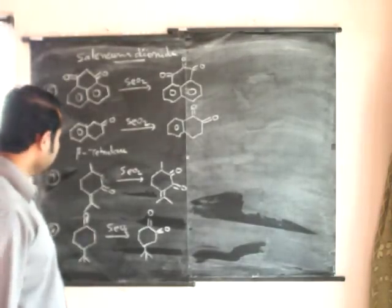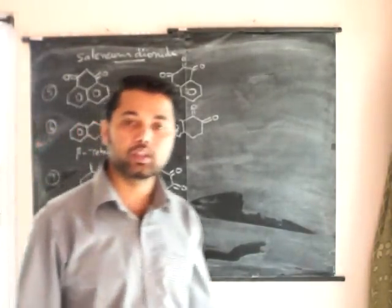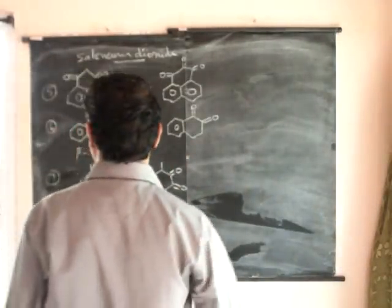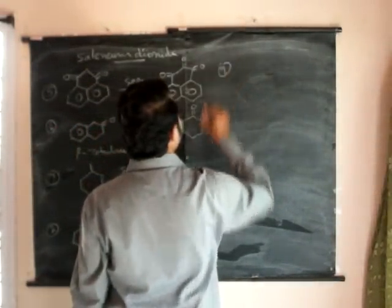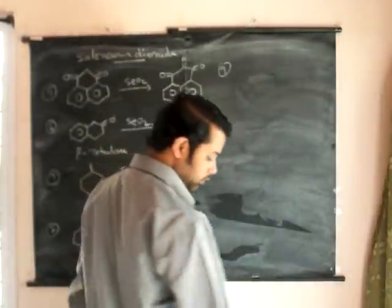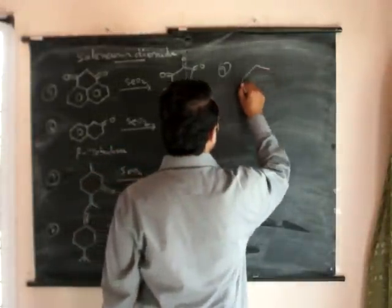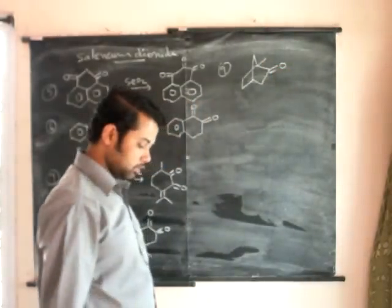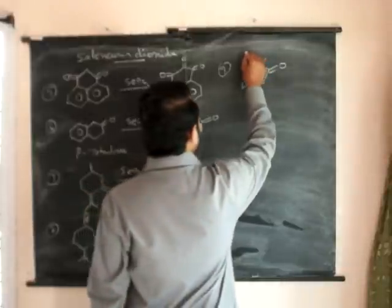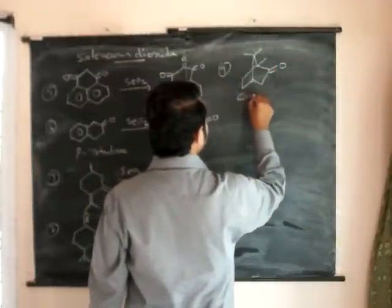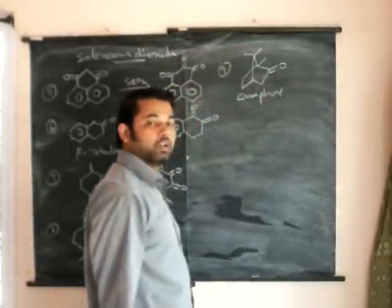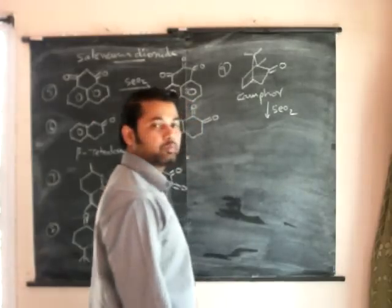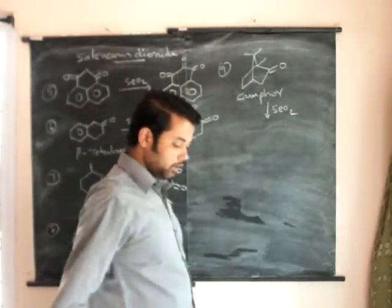Now these are eight examples. Let us see what will happen if we use camphor. Ninth example: if we use camphor - this is camphor - and if we do the selenium dioxide reaction over this, it will simply generate a keto group over there. This is the product.